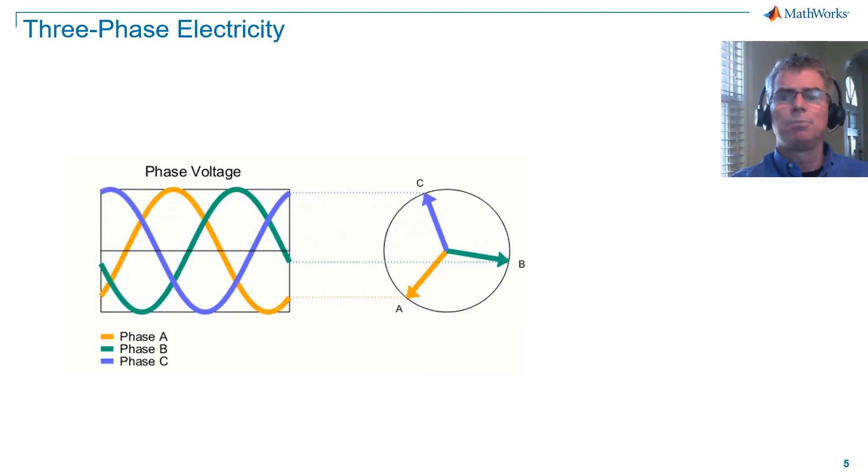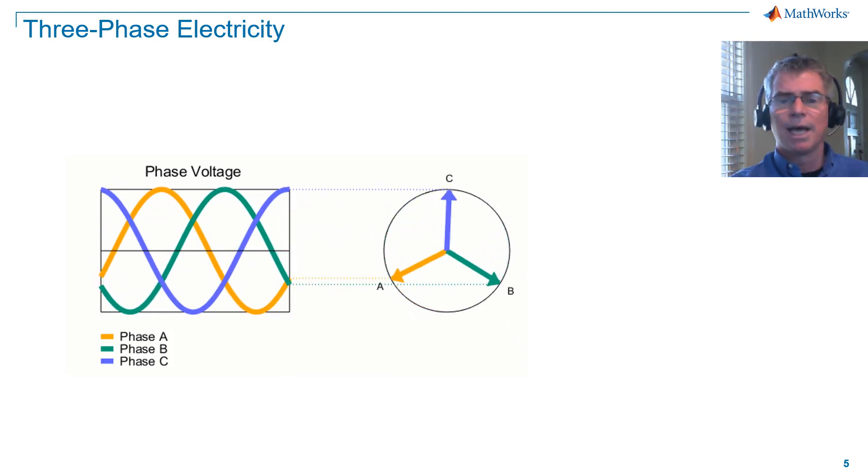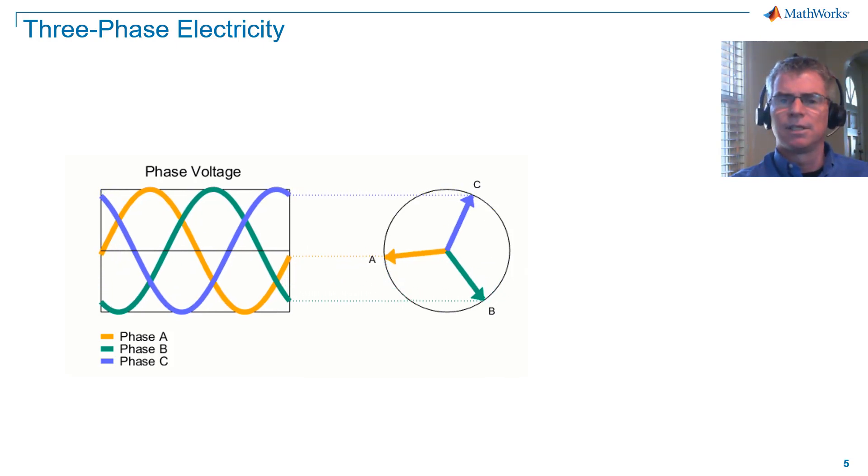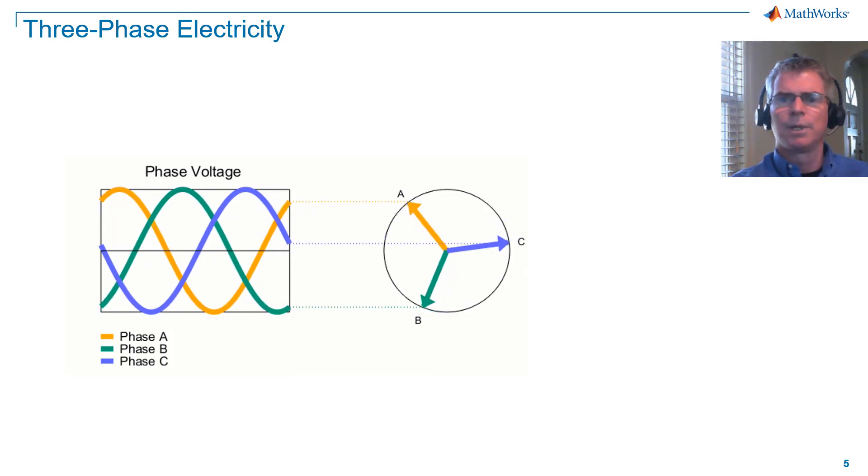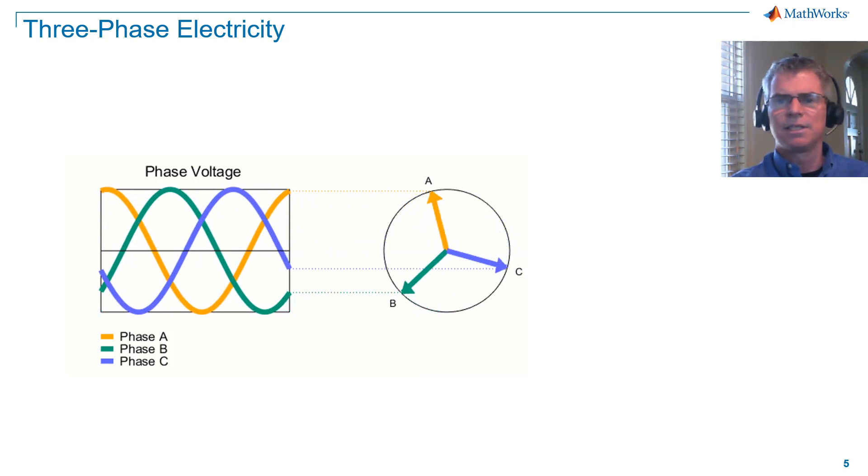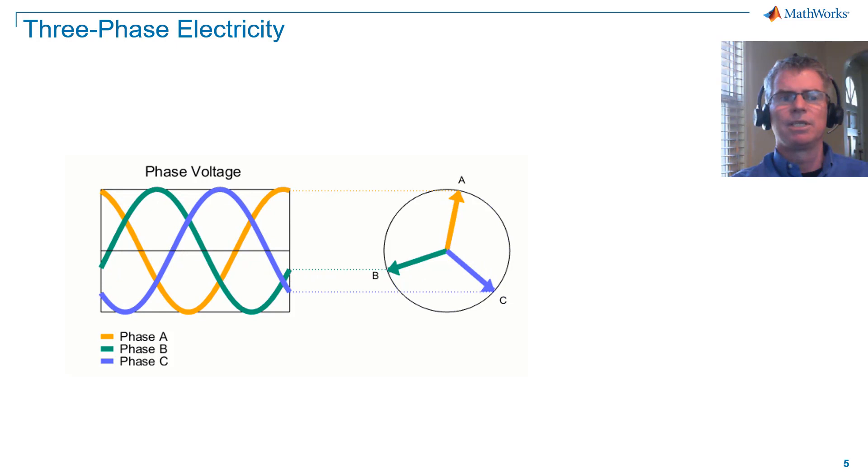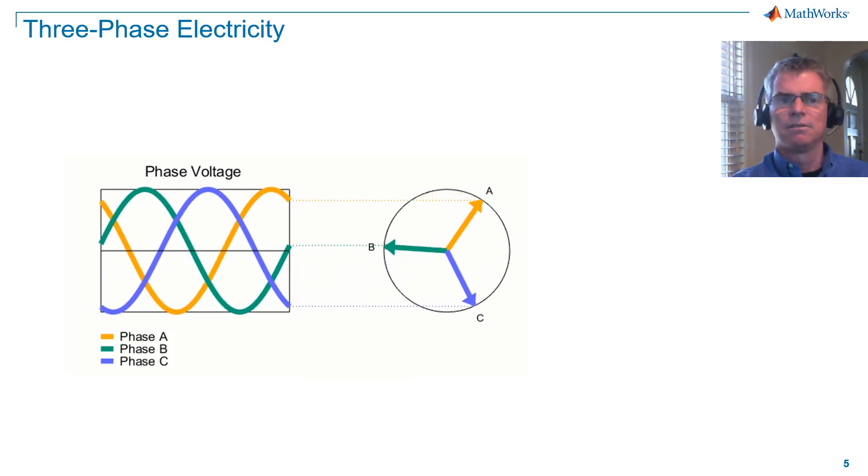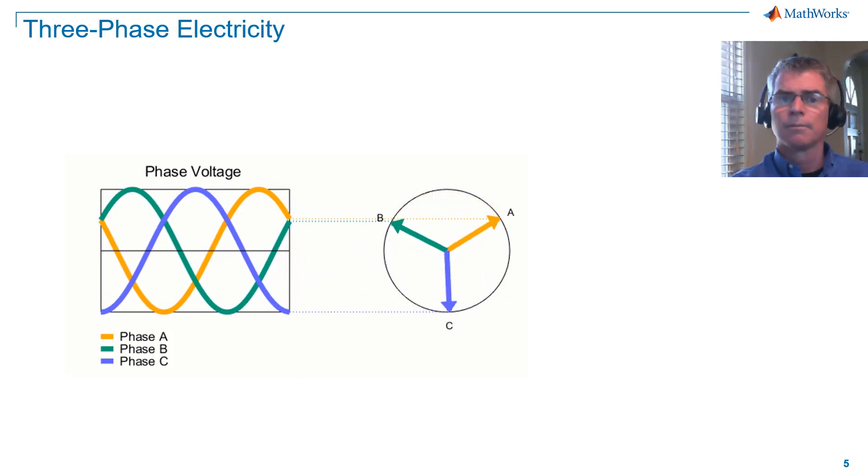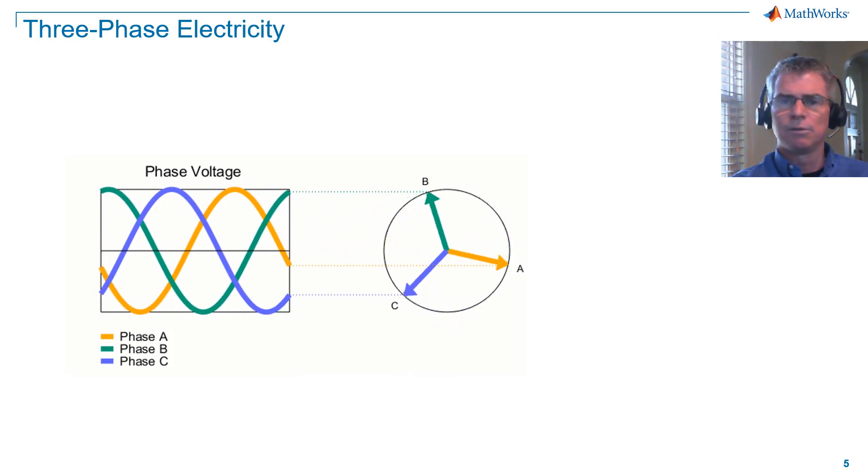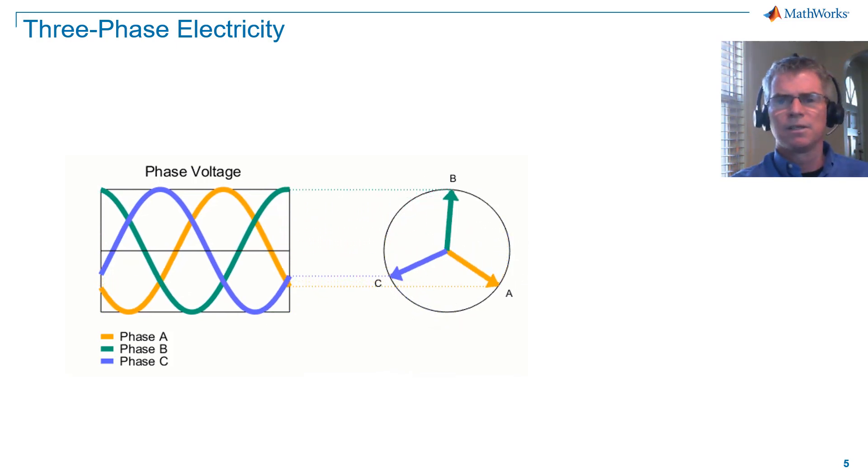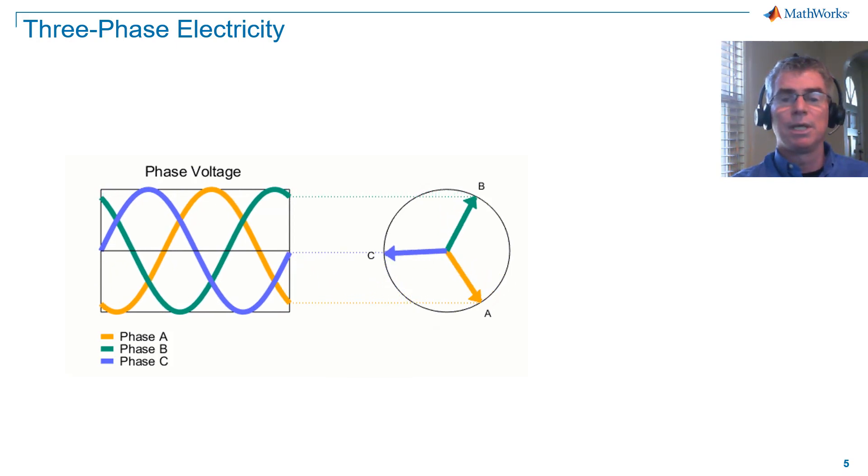You can see that phase B is 120 degrees behind phase A relative to the direction of rotation, and so we say that phase B lags phase A by 120 degrees. Phase C is 120 degrees ahead of phase A relative to the direction of rotation, and so we say that phase C leads phase A by 120 degrees. We refer to this voltage profile as being balanced.